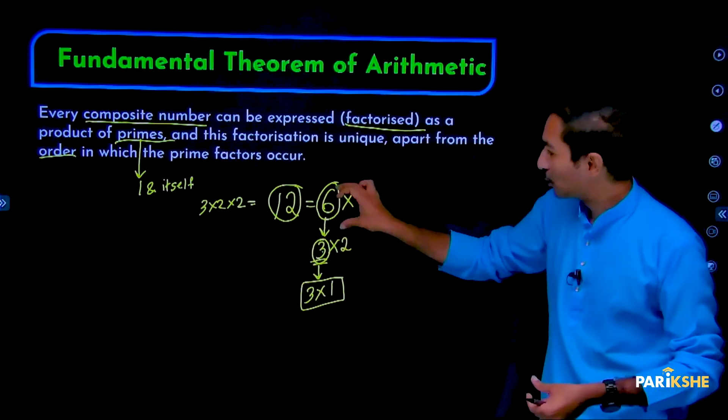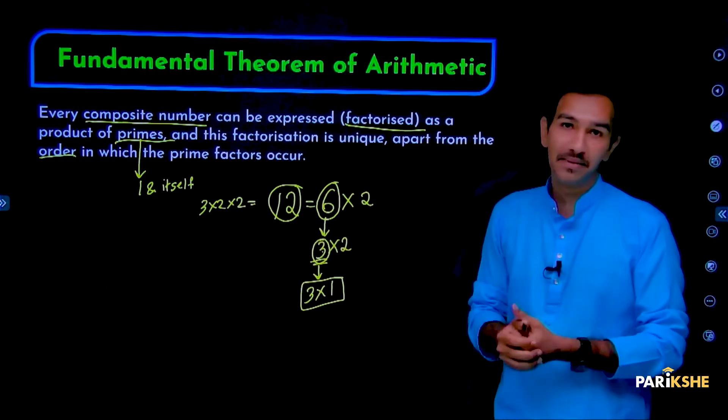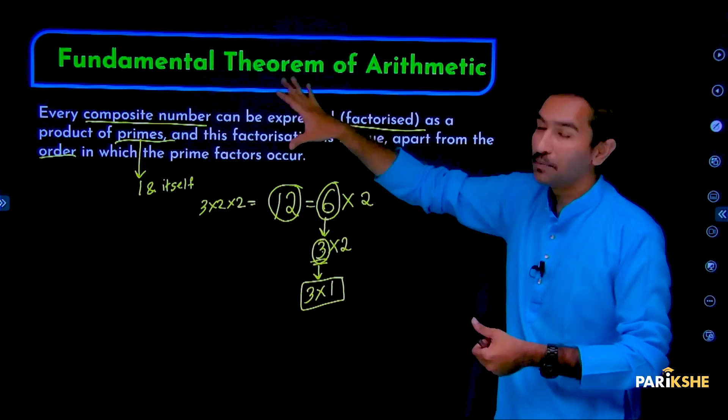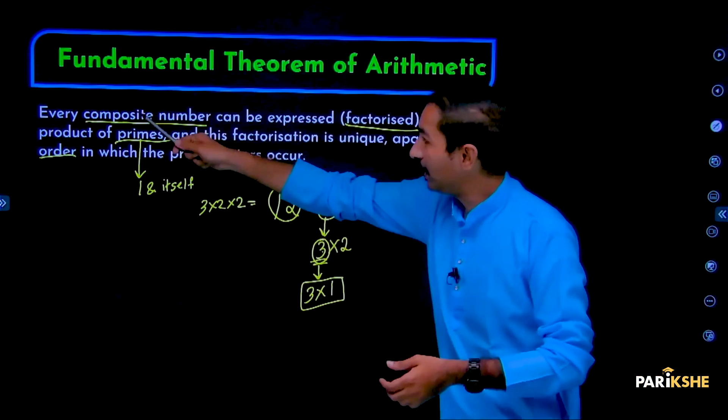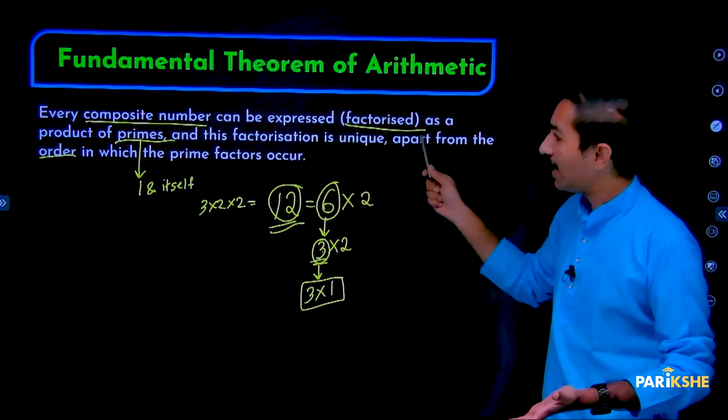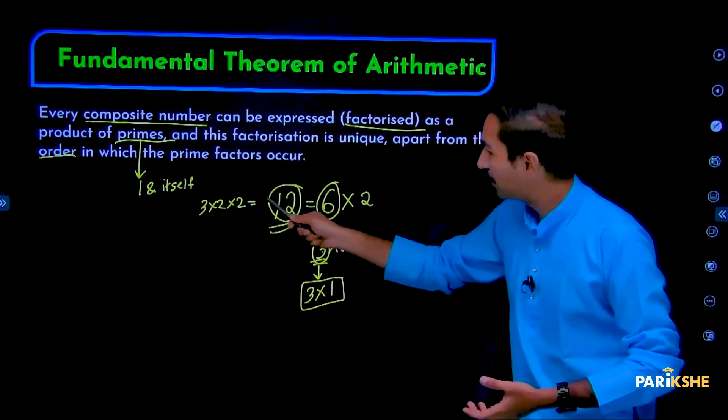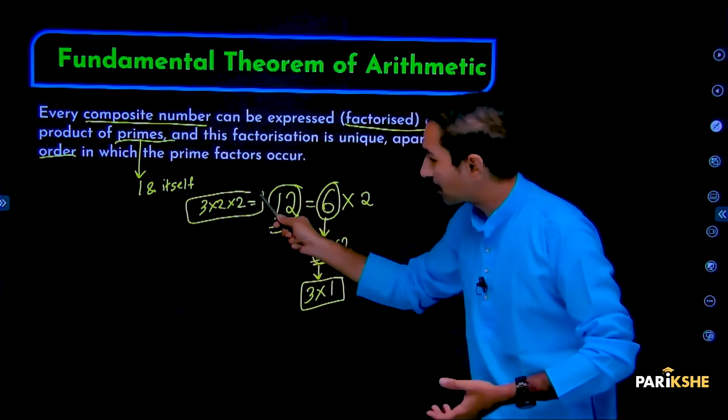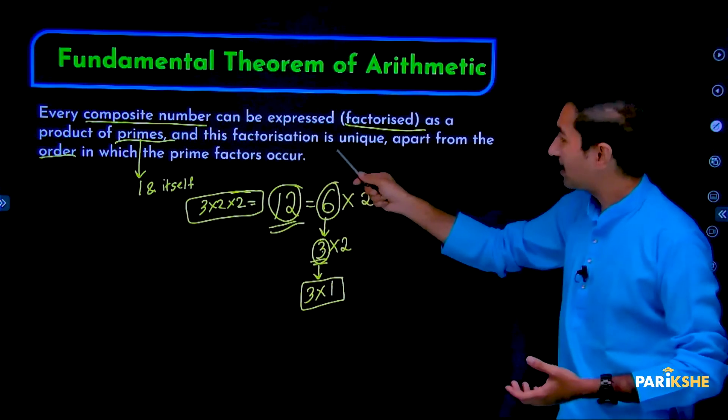These are composite numbers, and these are prime numbers. Understood? This is the Fundamental Theorem of Arithmetic. Let me note: every composite number can be expressed or factorized as a product of primes. We expressed 12 as a product of primes. And this factorization is unique.